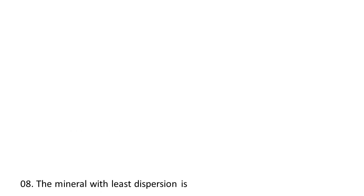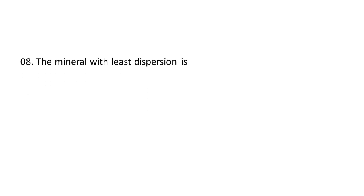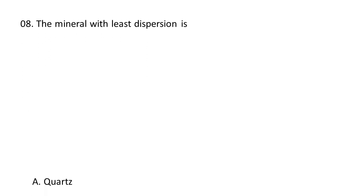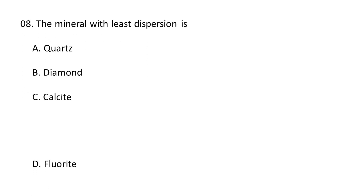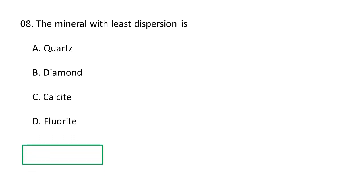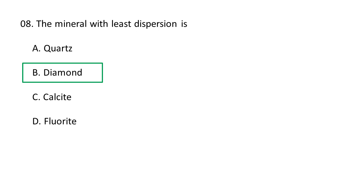Next question: The mineral with least dispersion is A. quartz, B. diamond, C. calcite, D. fluorite. The mineral with least dispersion is diamond. It has a least dispersion of about 0.044. Diamond has the least dispersion when compared to quartz, calcite, and fluorite.